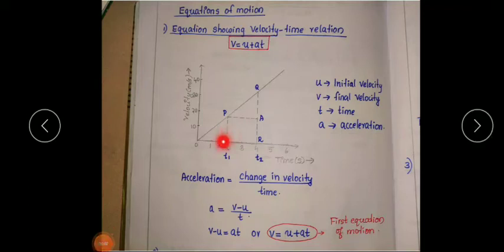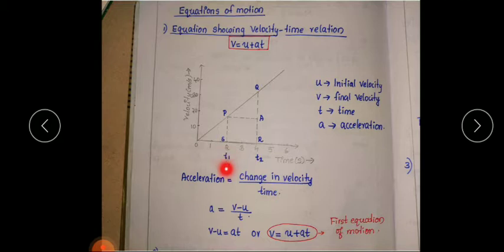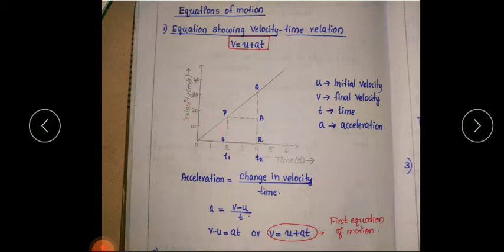In the graph you can see the same trapezium as PQRS. For deriving the second equation of motion, we have to find the displacement of the object between the time intervals T1 and T2. How can we find the displacement of the object using a velocity-time graph?